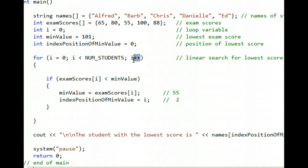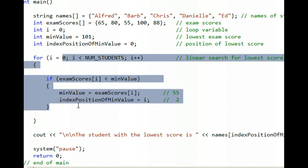And then i plus pluses to a 3, in which case we're checking to see if 100 is less than minValue. No, 100 is not less than 55, so all this gets skipped. And finally, i plus pluses, and i ends up being 4, and is 88 less than minValue? No, it's not. i does technically plus plus to 5, and since 5 is not less than NUM_STUDENTS, the for loop ends at that time.